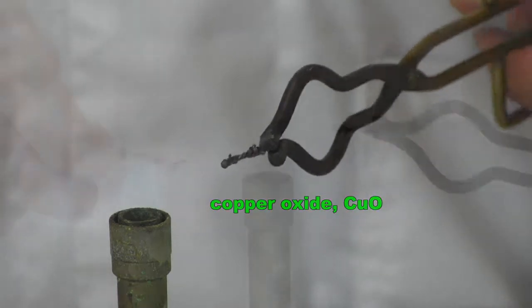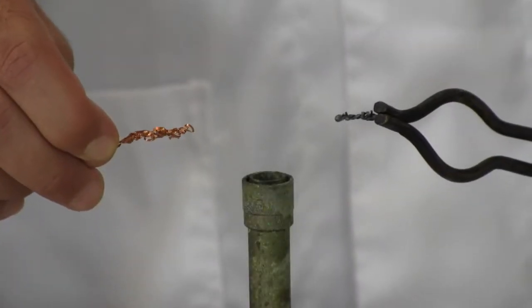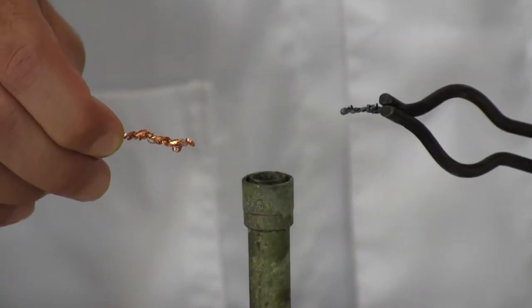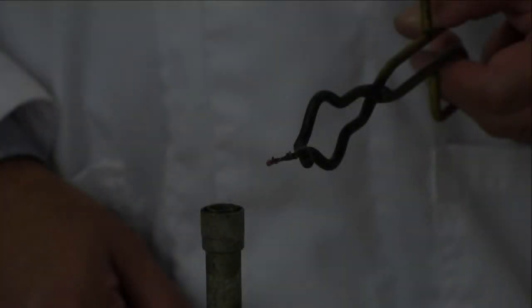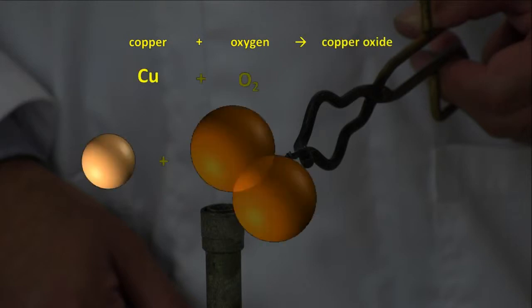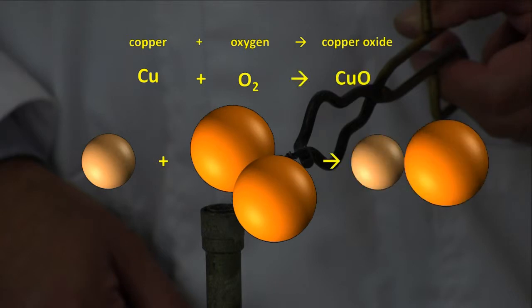Copper metal on the left, copper oxide on the right. The equation for the chemical reaction is copper plus oxygen produces copper oxide: Cu + O₂ produces CuO.